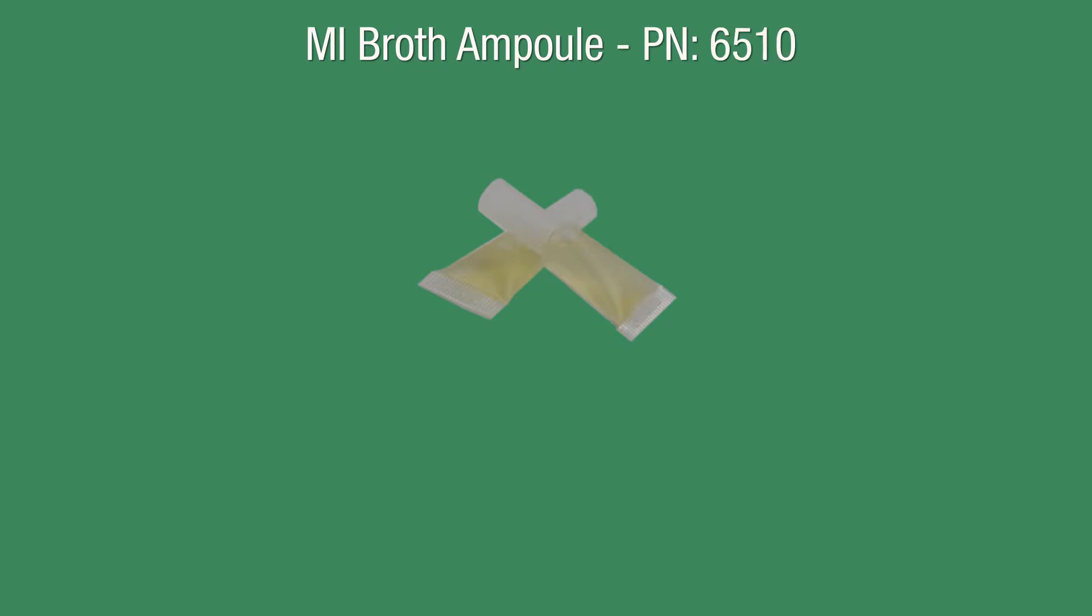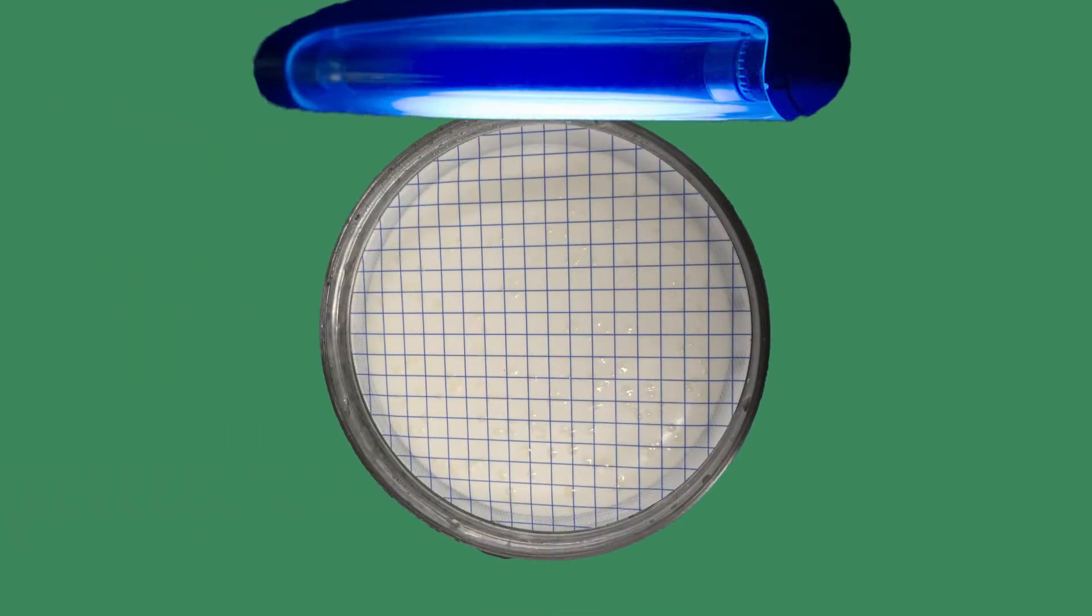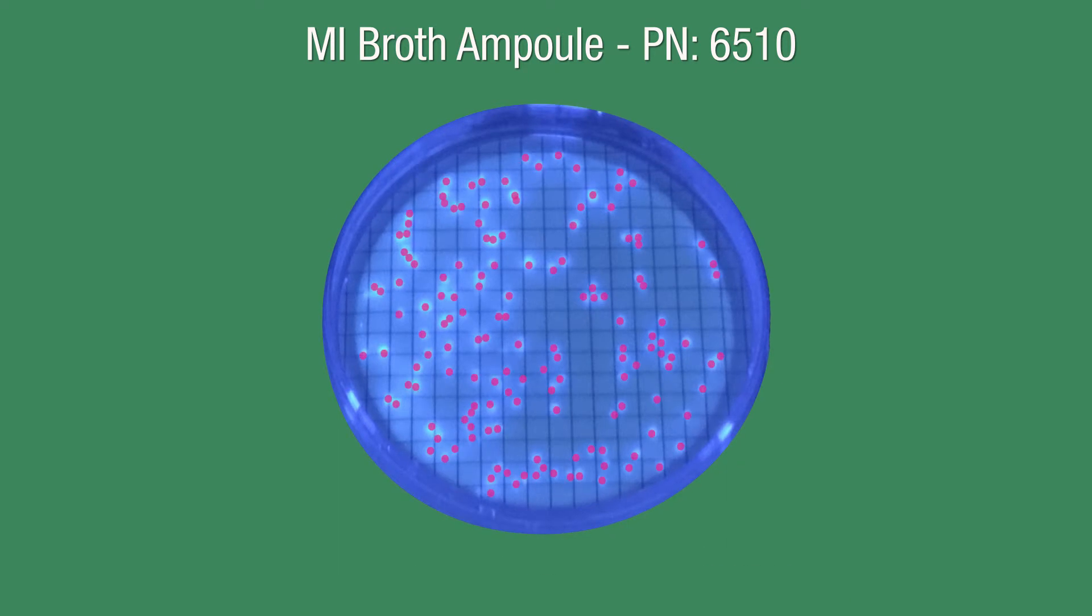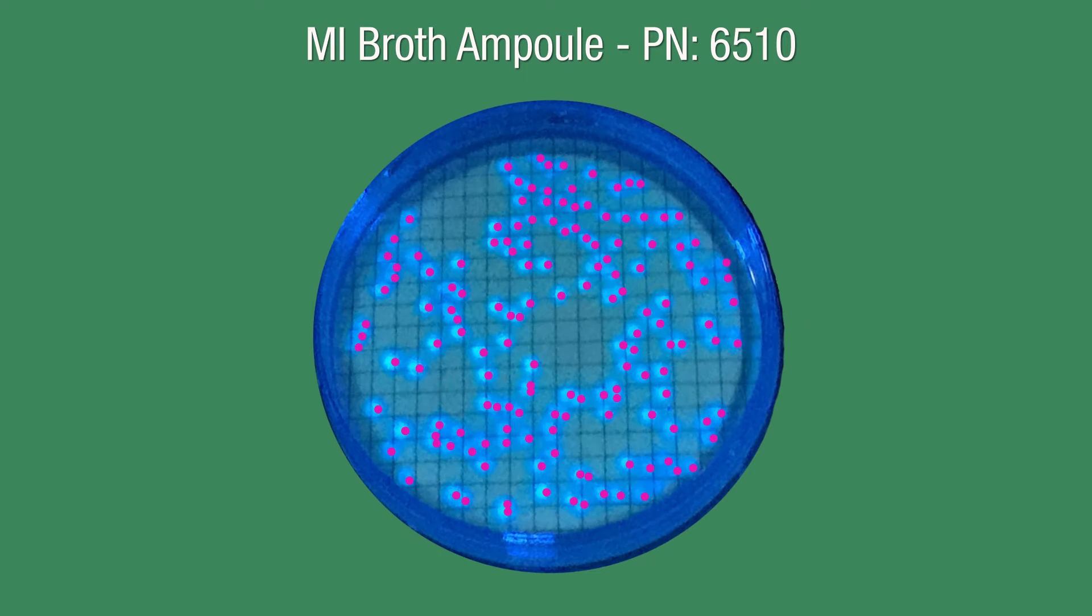Mi broth ampule. This medium is for the enumeration of total coliform and E. coli. It is a U.S. EPA developed and approved water testing method. To interpret results for total coliform, count all fluorescent colonies, regardless of colony color. For total E. coli, count all blue, fluorescent colonies.